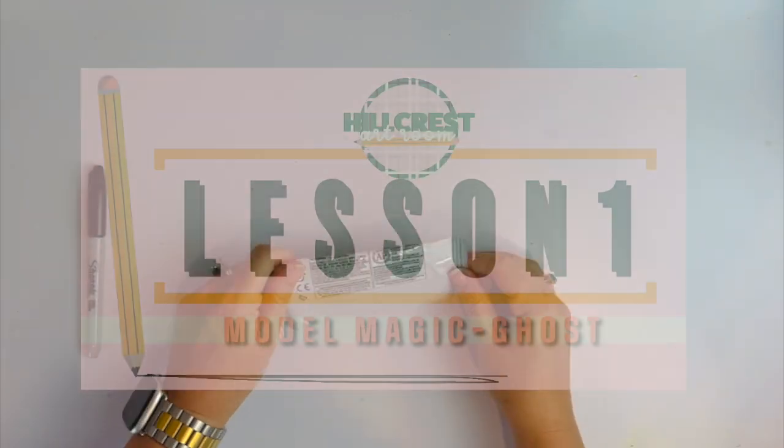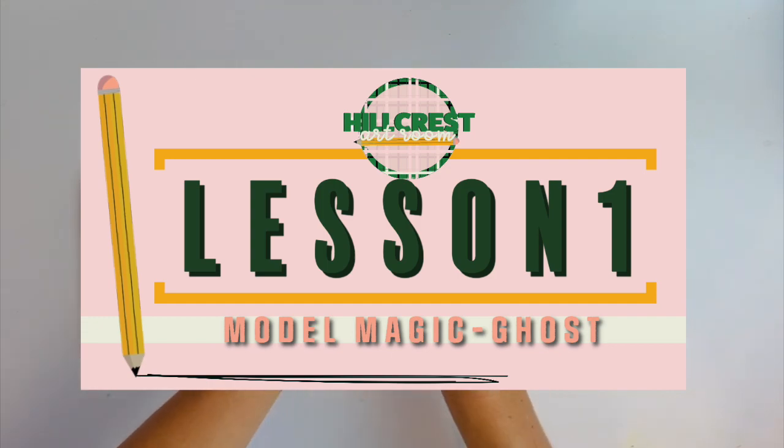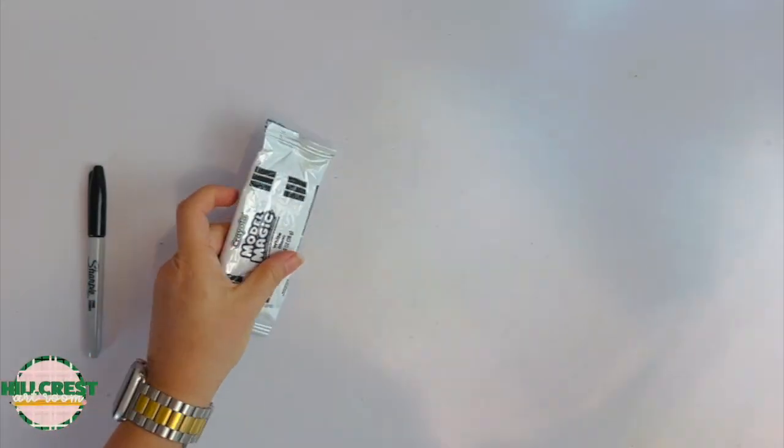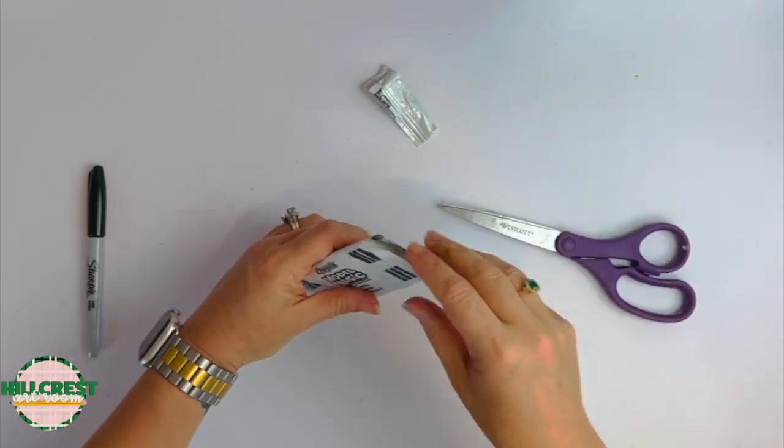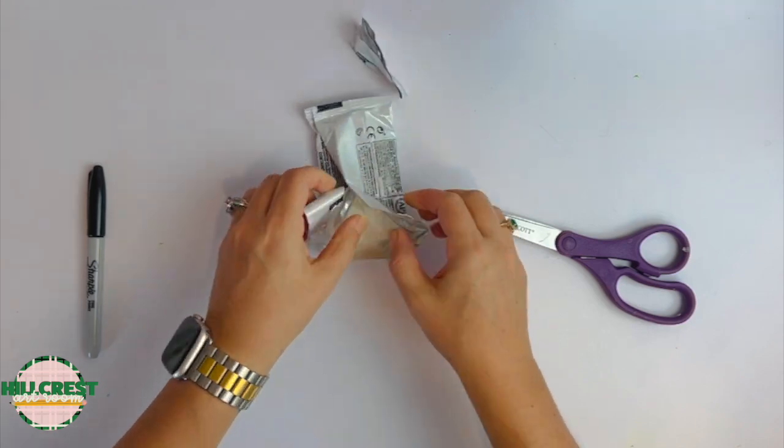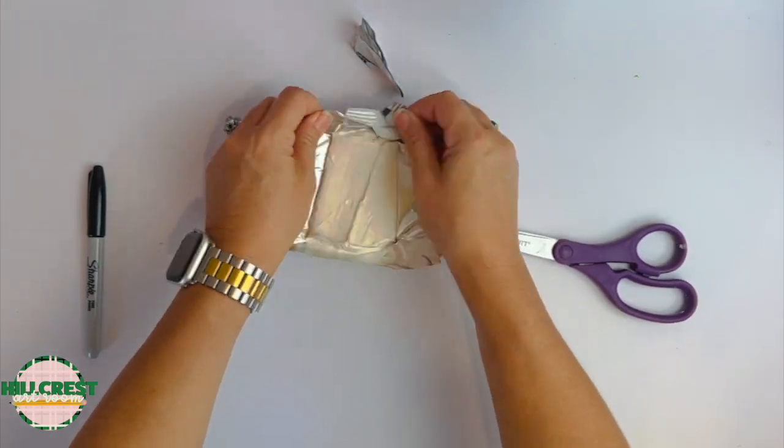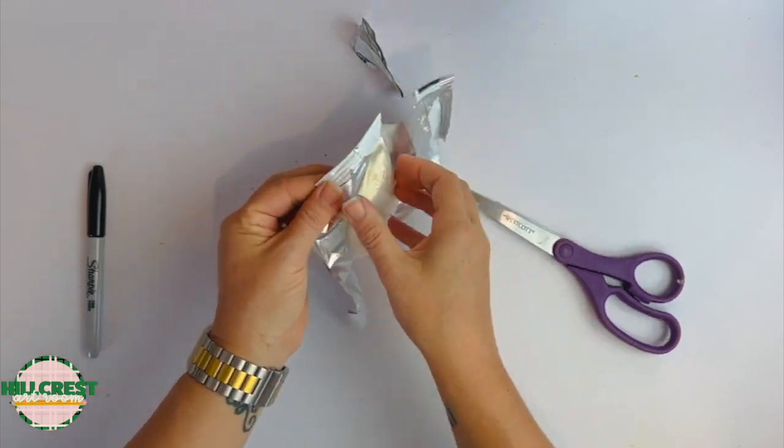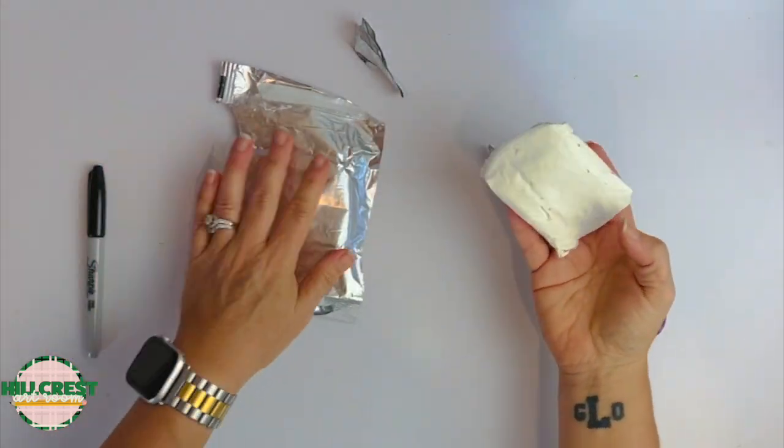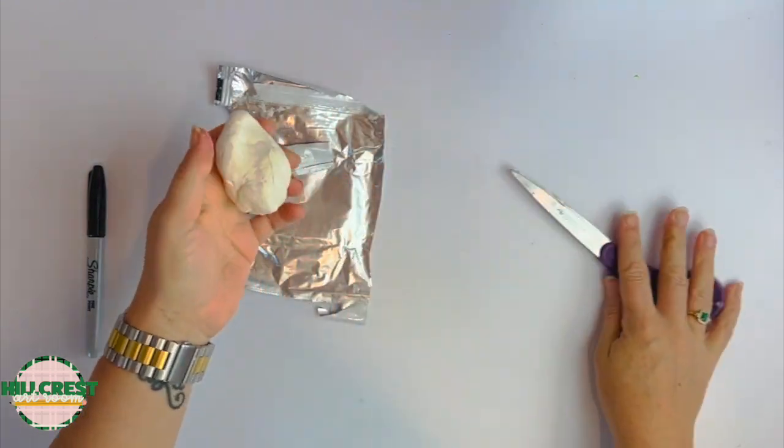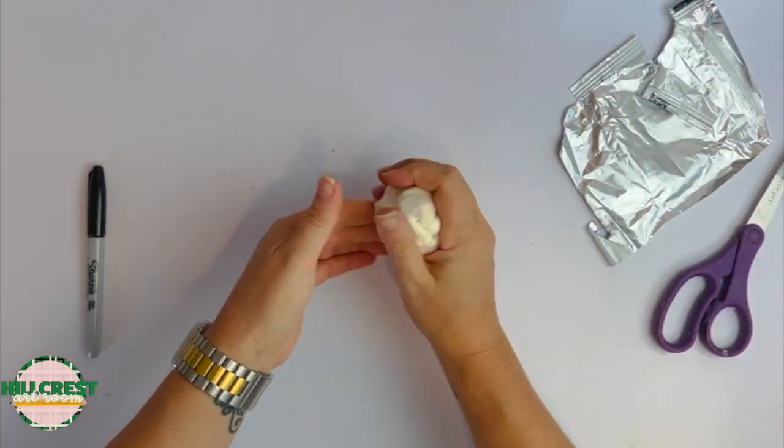Okay, we're going to make a ghost using Model Magic. You have one white package. If you have to cut it, make sure the trash goes in the trash can. I usually open the package this way. Be aware, if you're using one or two colors, this will stick to itself, so you don't ever want to touch two pieces together or they will stick.